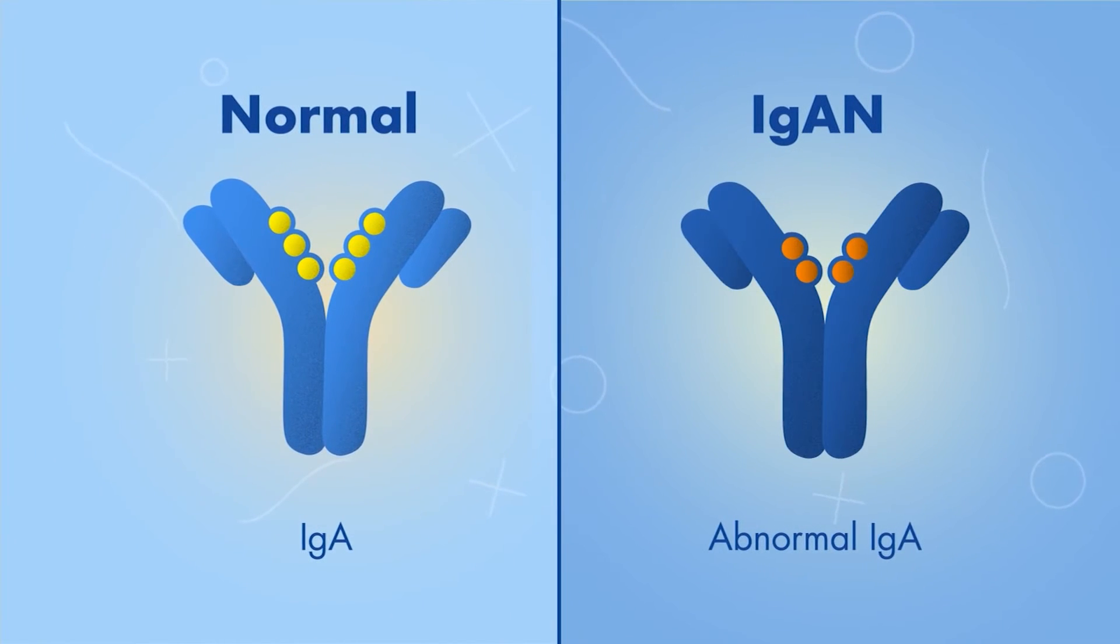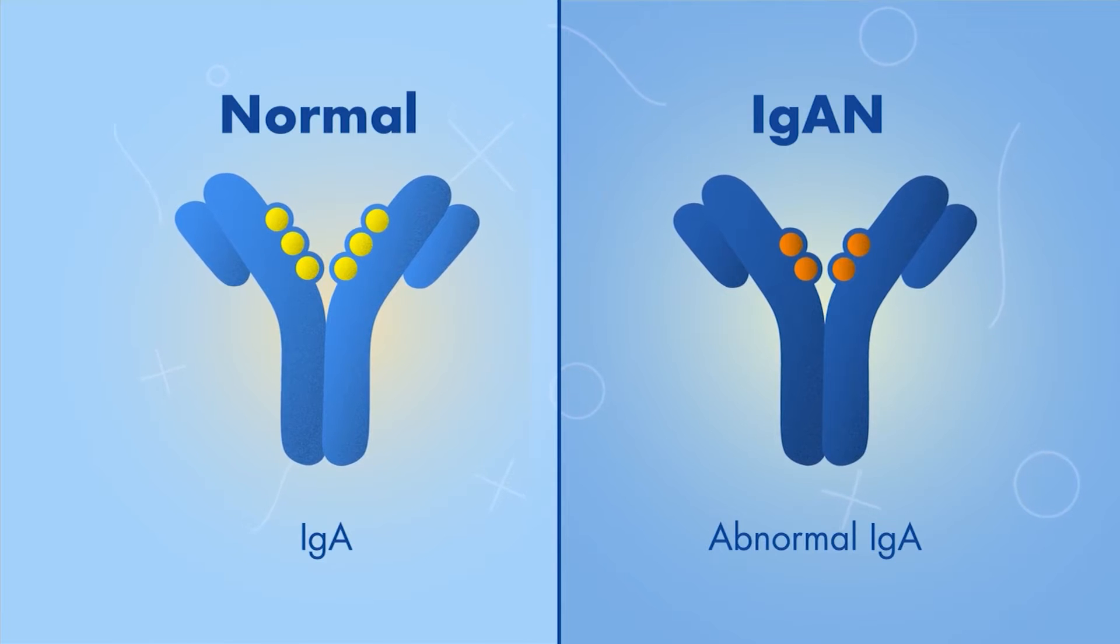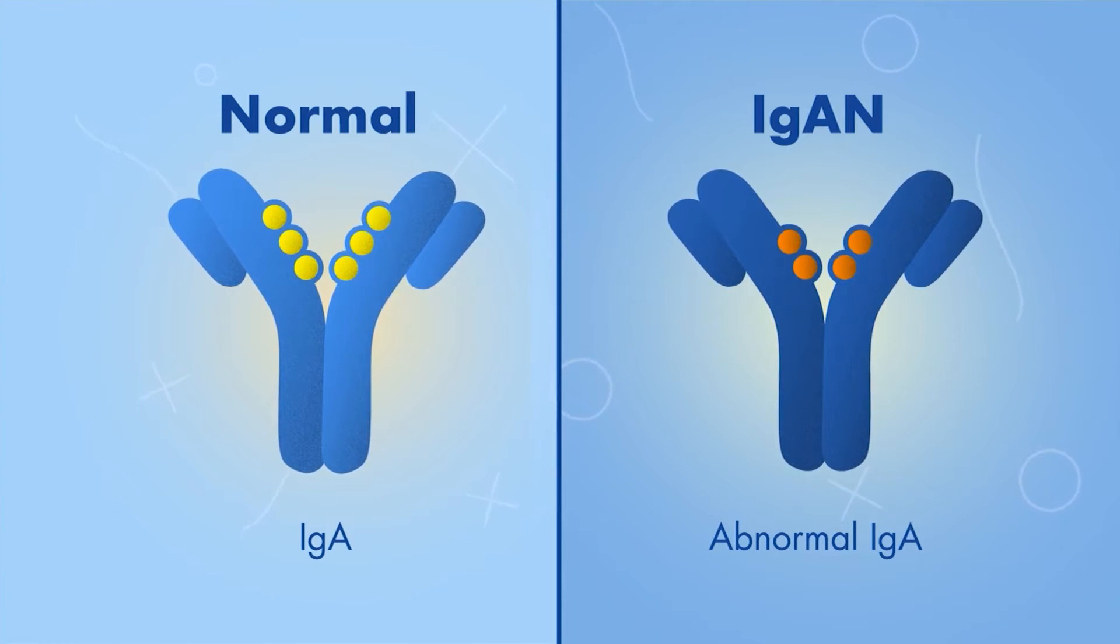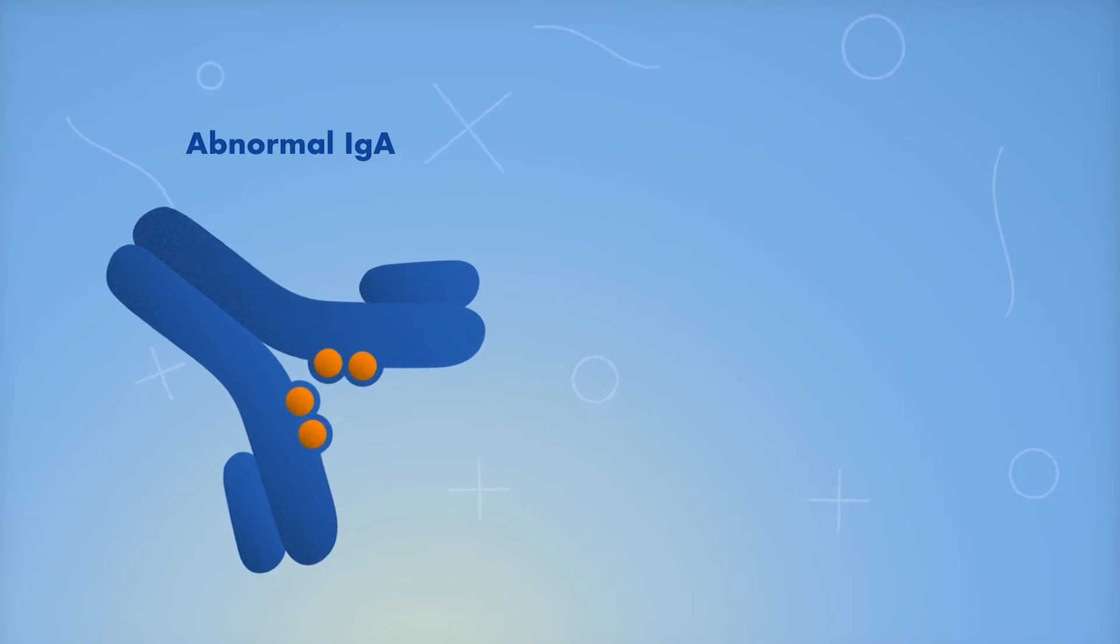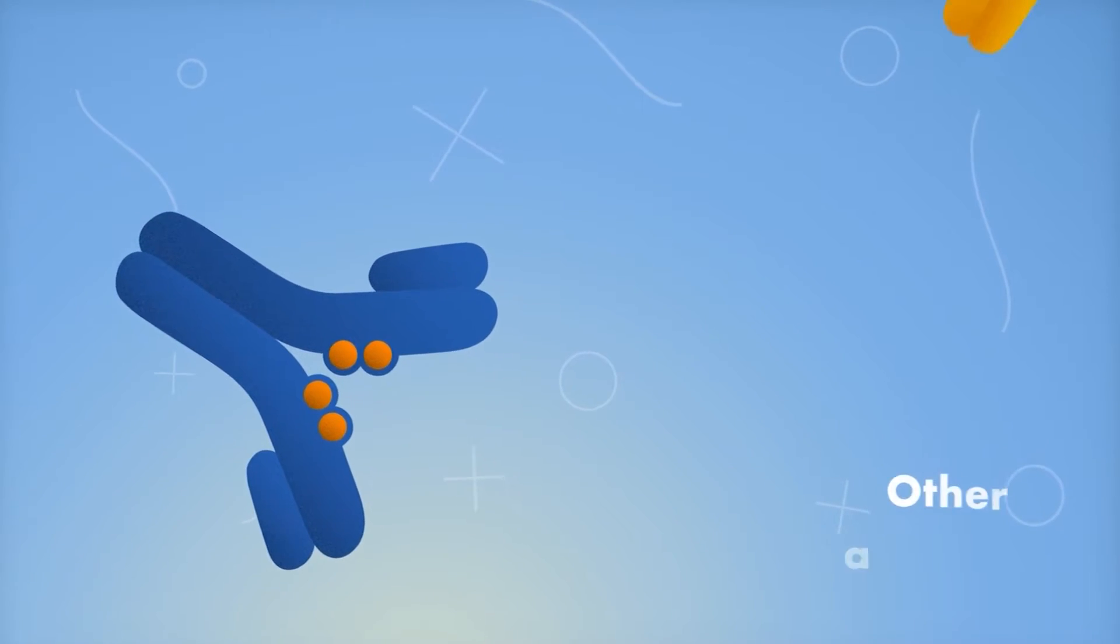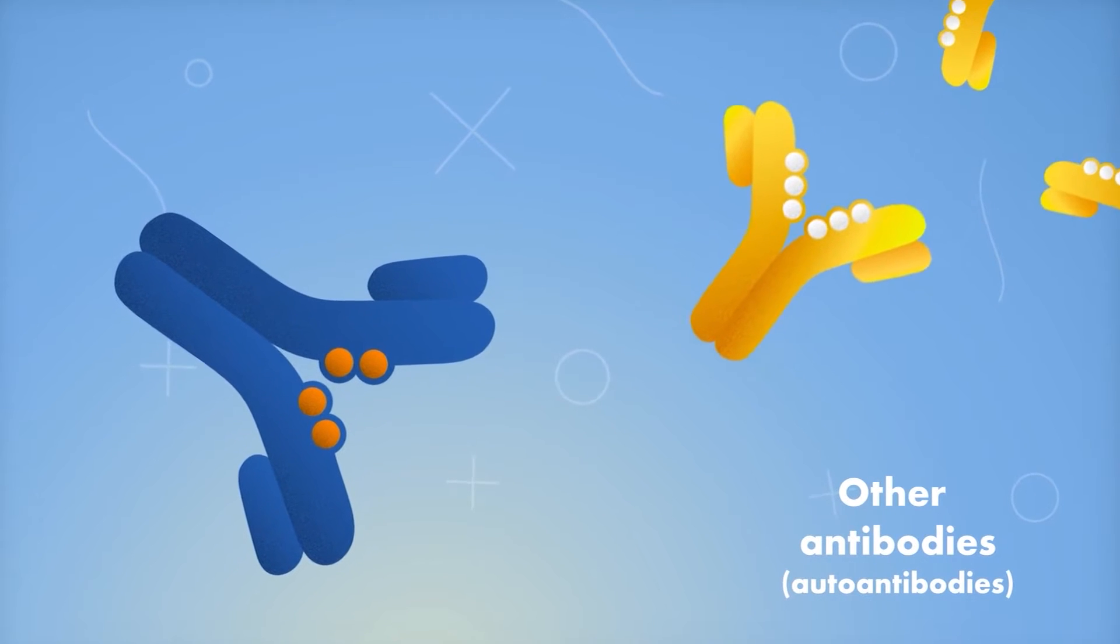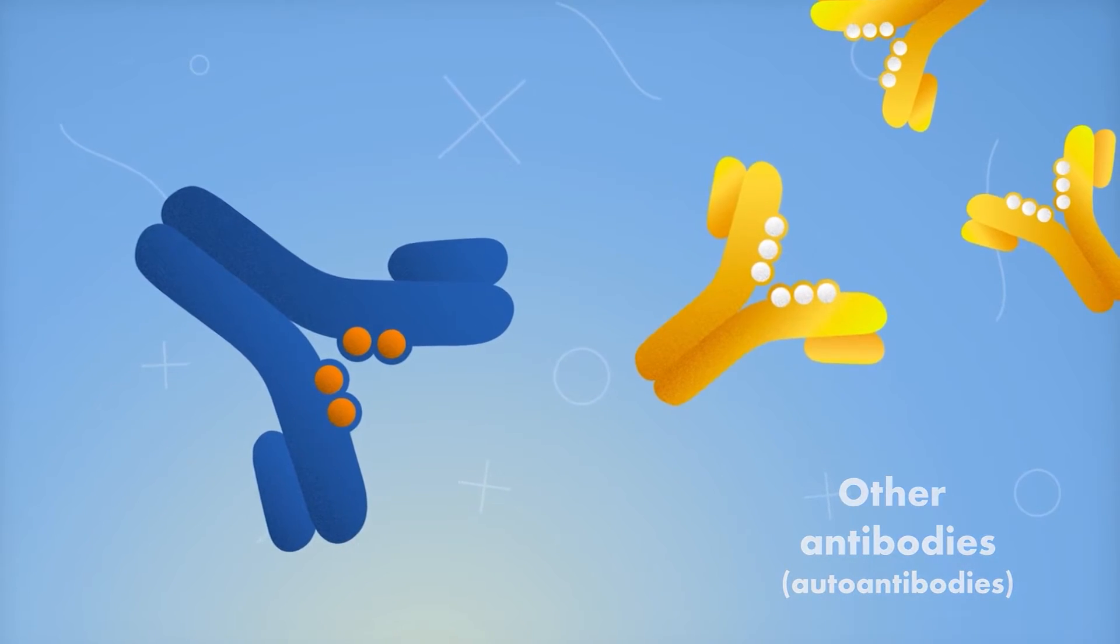In people with IgAN, the IgA has an abnormal structure. The body does not recognize this abnormal IgA and considers it foreign. The body then produces other antibodies, known as autoantibodies, against the abnormal IgA.